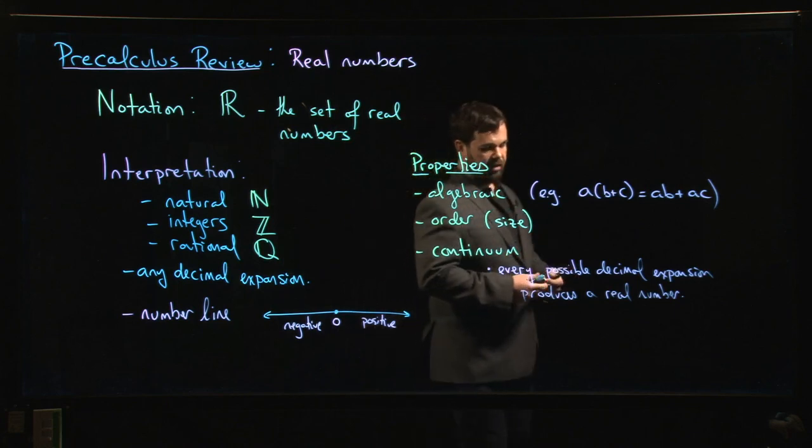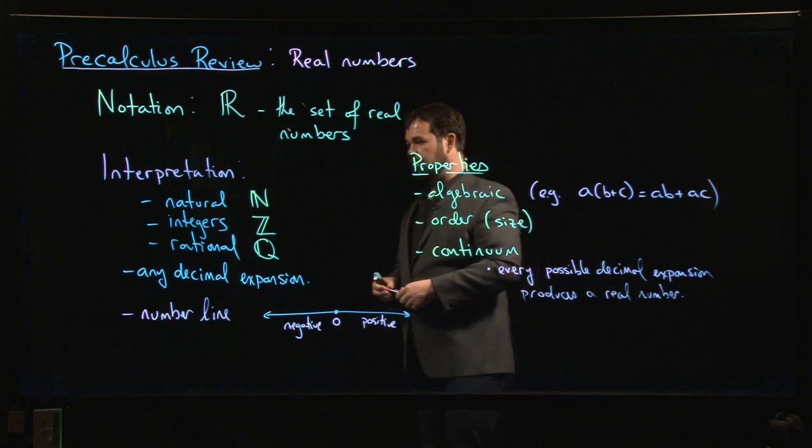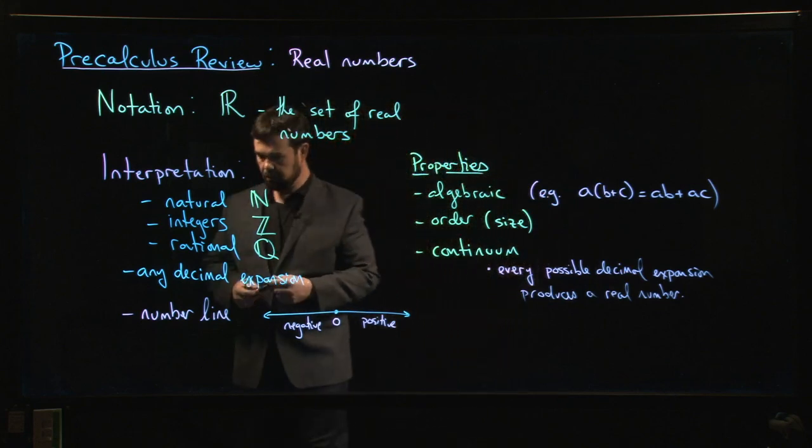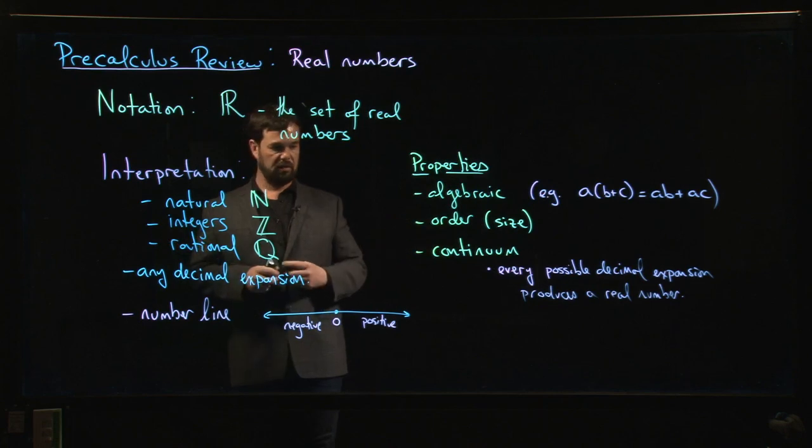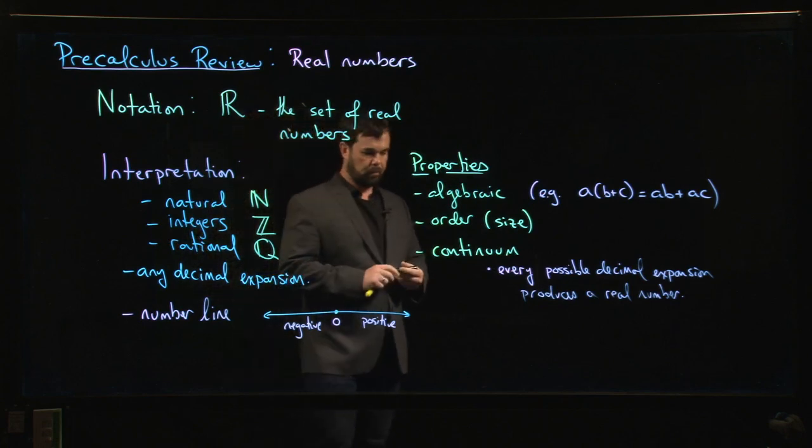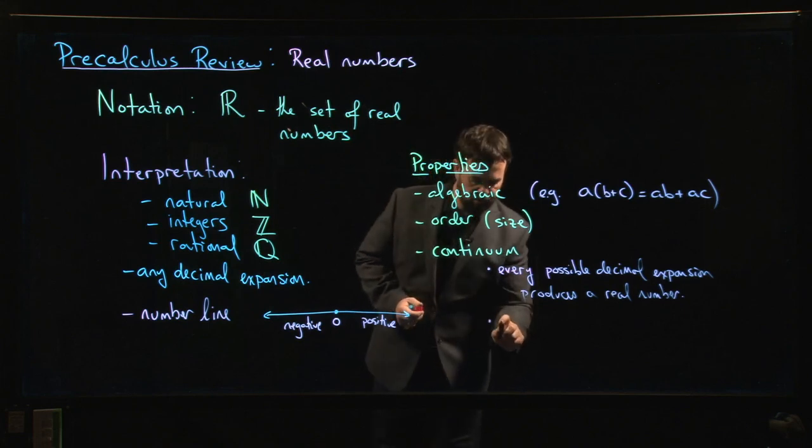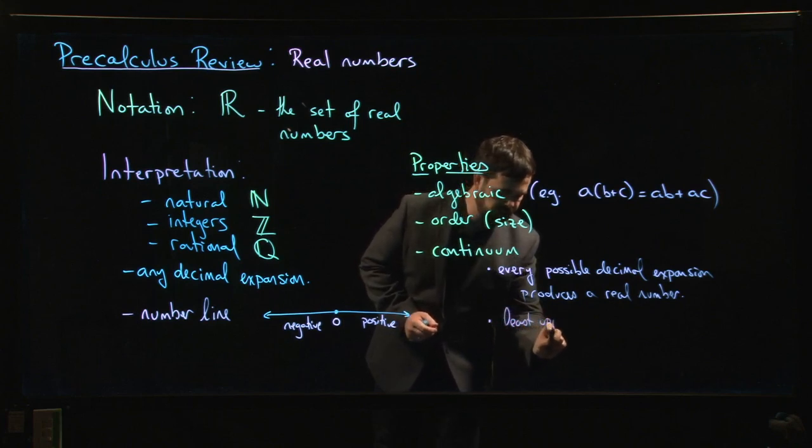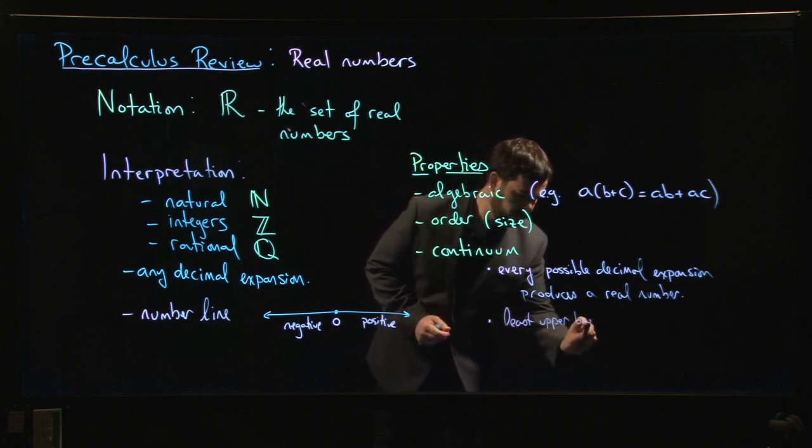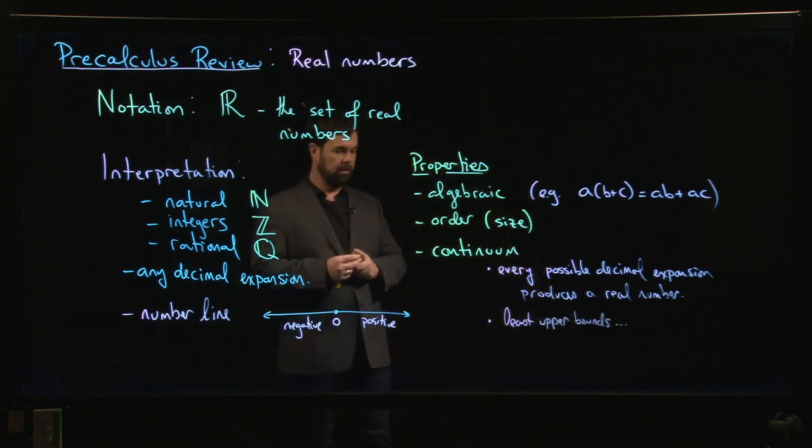So one way to think about what the continuum property means is that every possible decimal expansion produces a real number. The precise statement of this would be stated in terms of sequences and series, something you probably won't see until your second or third course in calculus. But we know that this is not true for rational numbers. There are lots of decimal expansions that don't correspond to rational numbers because if the expansion doesn't terminate and it doesn't repeat, you don't have a rational number. Another way to phrase this continuum property is in terms of what are called least upper bounds, but that's not something that we want to get into.